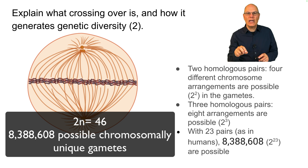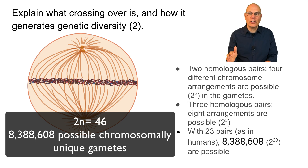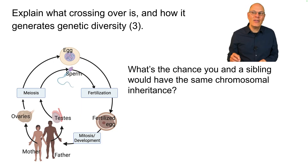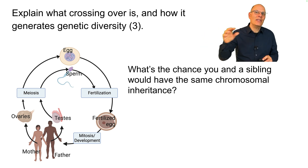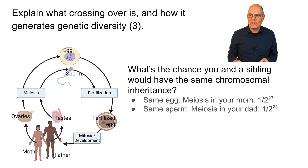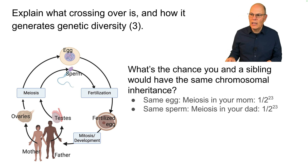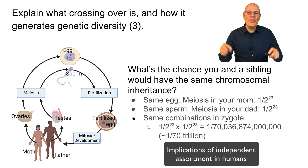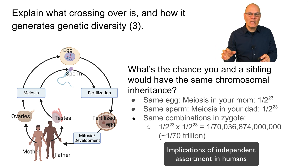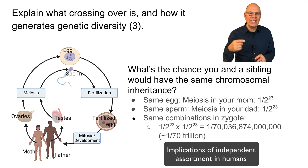That's the chance that any two sperm cells or any two egg cells would have exactly the same array of maternal and paternal chromosomes. So what's the chance that you and a sibling would have the same chromosomal inheritance — inheriting the same array of chromosomes from your dad's sperm and your mom's egg? Those are independent events: the same egg is one over 2²³, the same sperm is one over 2²³. Multiply those together and that's one in 70 trillion. That's why meiosis is so phenomenal. This is independent assortment — what every chromosome does is independent of every other chromosome pair, and that creates tremendous diversity in the offspring.